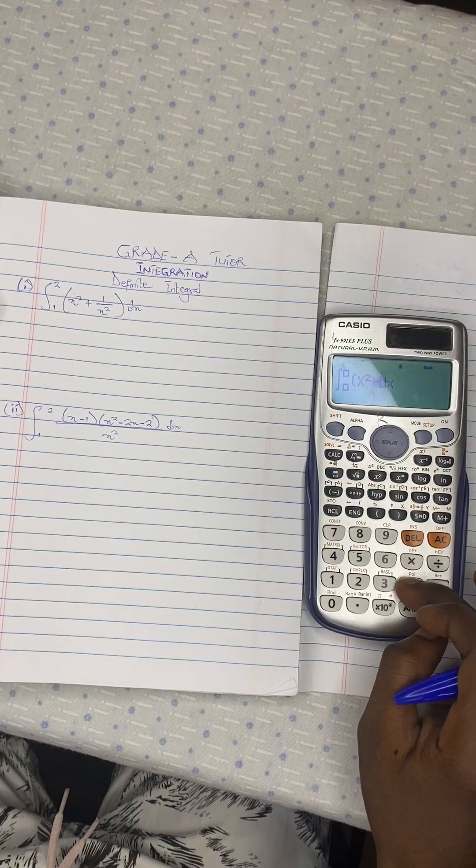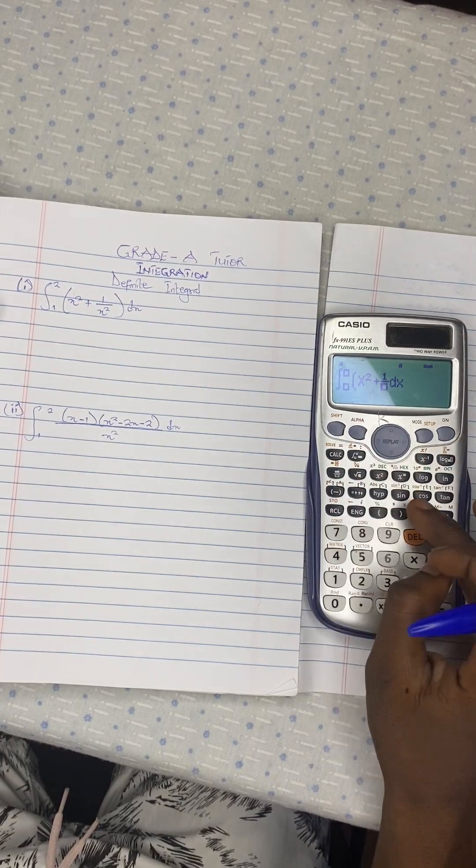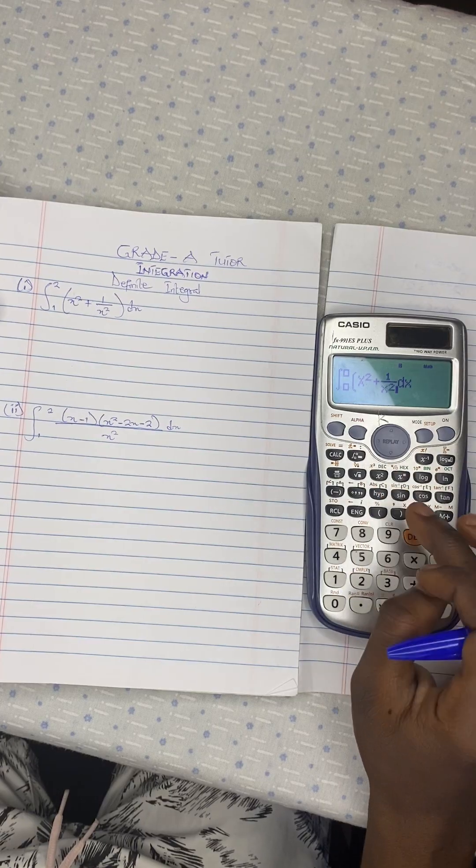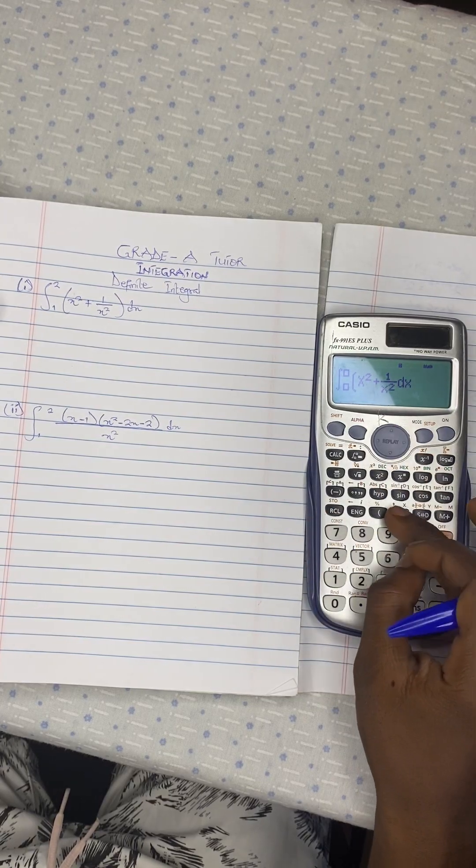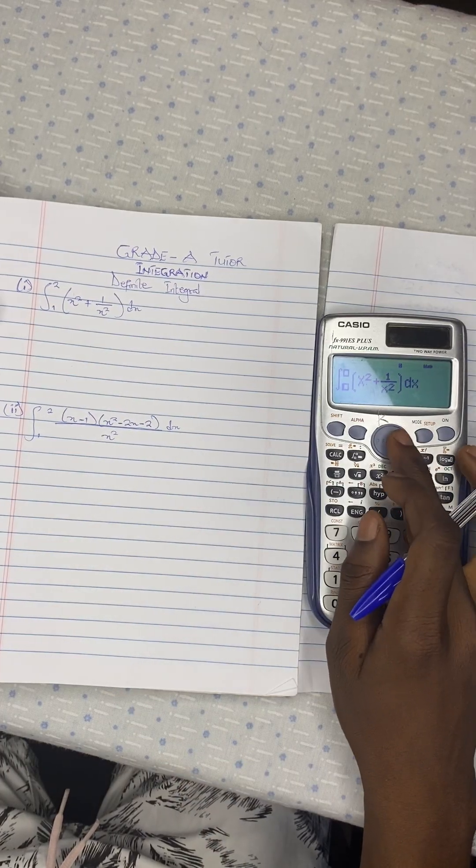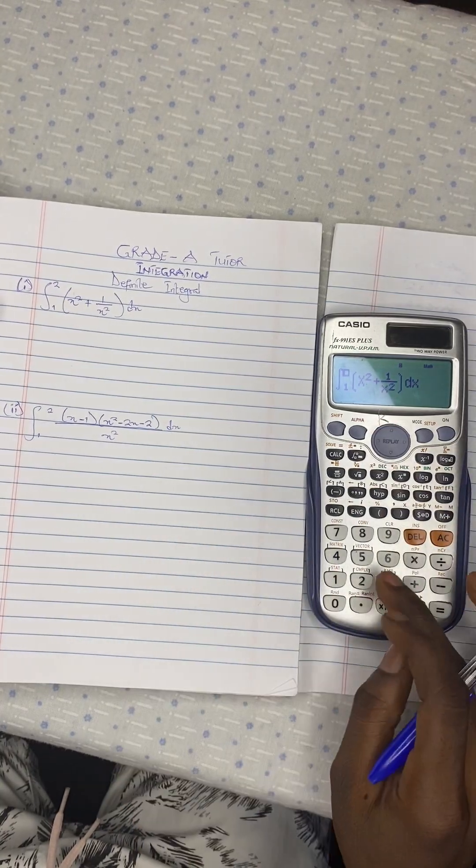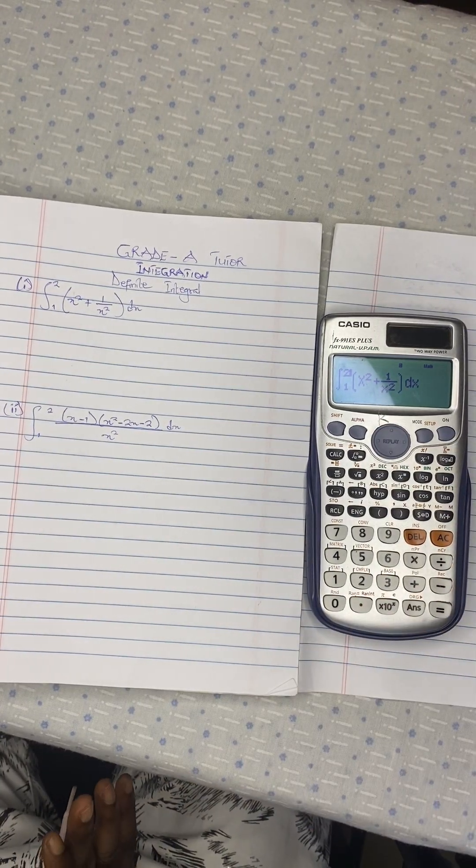Plus one over x squared again, then we close the brackets. You see the dx, dx is here, so we need the lower limits which is one and the upper limit which is two, and we are done.